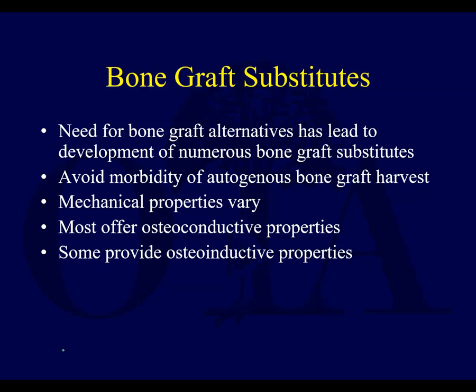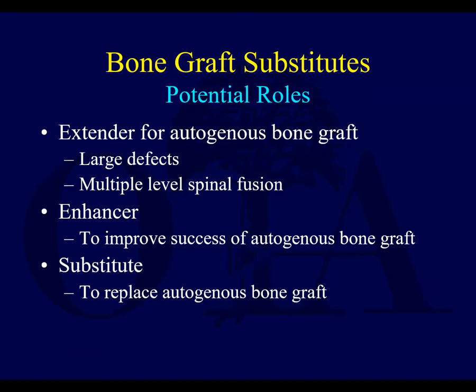This portion of the slide show we're going to focus mostly on bone graft substitutes. The need for bone graft alternatives has led to the development of all kinds of bone graft substitutes. The good thing is they can avoid morbidity of autogenous graft harvest. Most have osteoconductive properties, and some types of grafts can have osteoinductive properties if they have growth factors. Bone graft substitutes can act as an extender for autogenous graft — if you have really large defects with limited graft quantity, a bone graft substitute can help. Multiple level spine fusion is another example. It can also act as an enhancer, simply to substitute or replace autogenous graft.